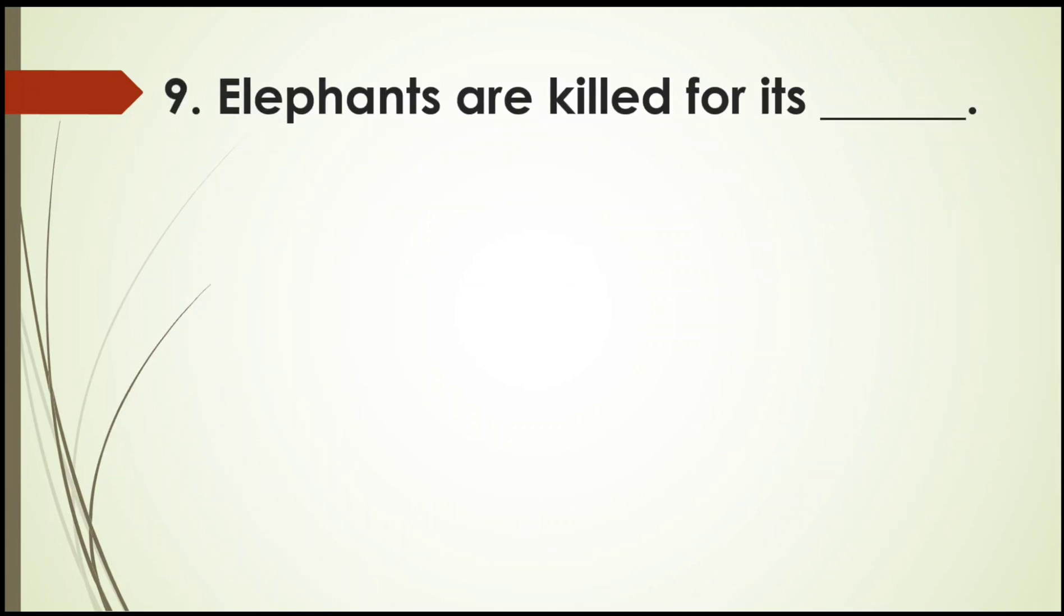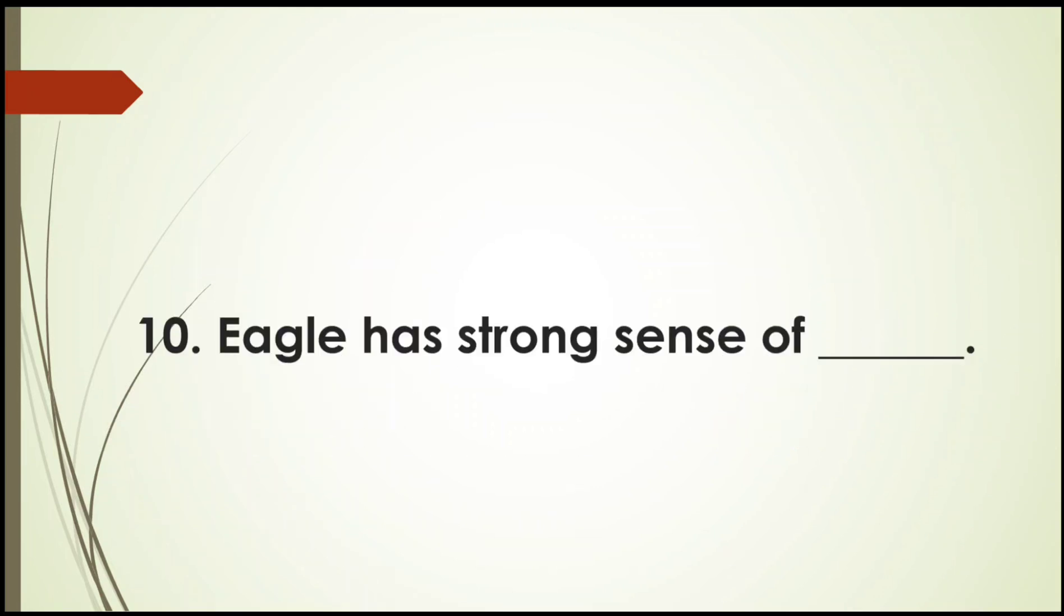Next question. Elephants are killed for its dash. Many animals are killed for their valuable body parts. Options: Tusk, Scent, Horns, or Legs. Elephants are killed for its tusk. Two teeth of elephant are known as tusk. So elephants are killed for its tusk.